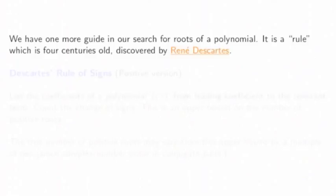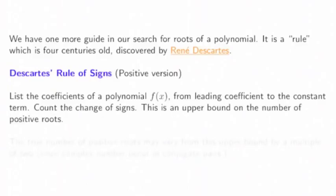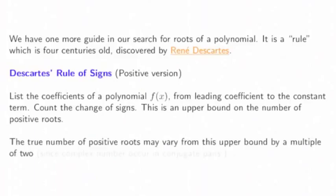We have one more guide in our search for roots of a polynomial. It's a rule which is four centuries old, discovered by René Descartes. Here's Descartes' rule of signs, the positive version. List the coefficients of a polynomial f(x) from leading coefficient to the constant term. Count the changes of sign. This is an upper bound on the number of positive roots. The true number of positive roots may vary from this upper bound by a multiple of two, since complex numbers come in conjugate pairs.